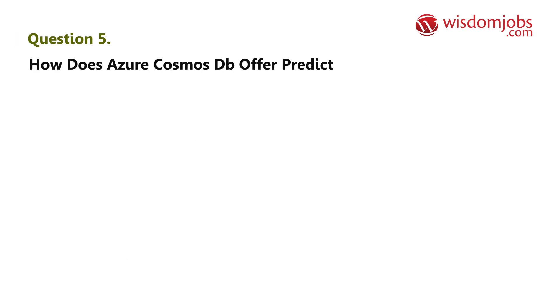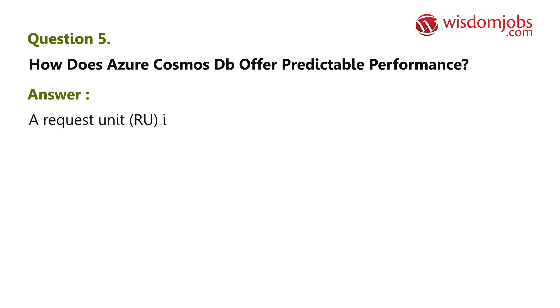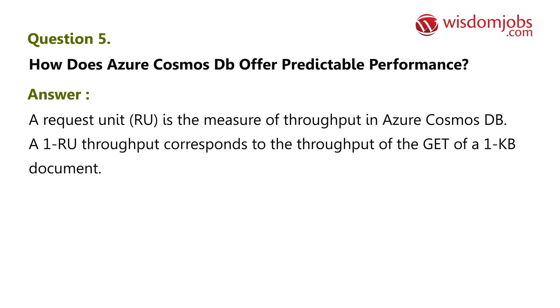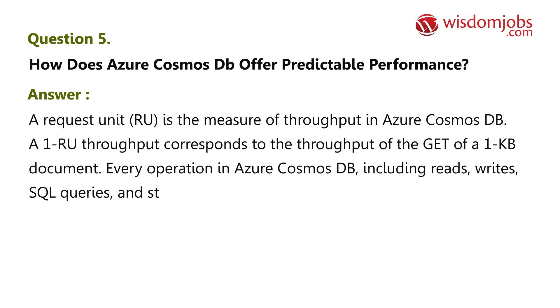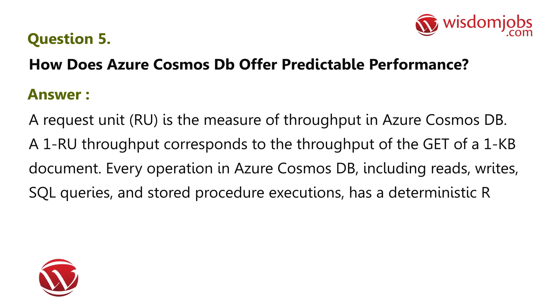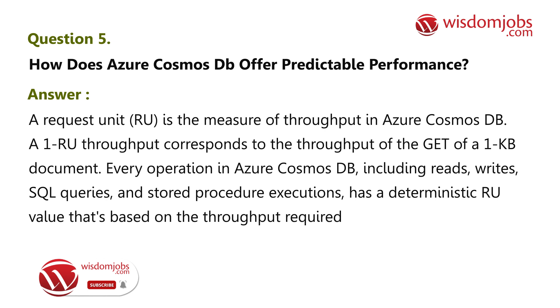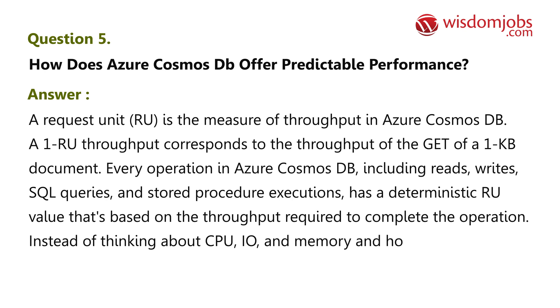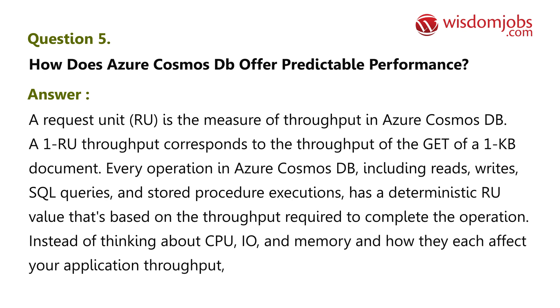Question 5: How does Azure Cosmos DB offer predictable performance? Answer: A Request Unit (RU) is the measure of throughput in Azure Cosmos DB. A 1 RU throughput corresponds to the throughput of a GET of a 1 KB document. Every operation in Azure Cosmos DB — including reads, writes, SQL queries, and stored procedure executions — has a deterministic RU value based on the throughput required to complete the operation. Instead of thinking about CPU, IO, and memory, you can think in terms of a single RU measure.